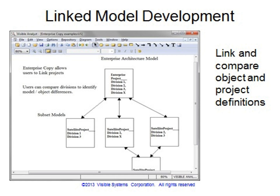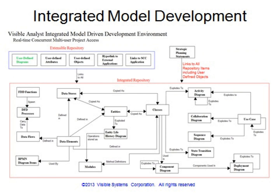The Visible Analyst enterprise copy feature is used as part of the enterprise architecture function and allows you to link, compare, update, and then synchronize the linked repository objects and project definitions. This diagram visually displays some, but not all, of the model and repository cross-linking, reuse, traceability, and integration features of the Visible Analyst.